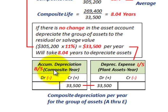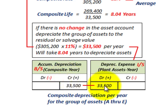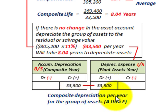To record the depreciation each year, on our balance sheet we credit accumulated depreciation for $33,500, and the debit goes to depreciation expense for plant assets on our income statement for $33,500. This composite depreciation rate is used each year to determine the accumulated depreciation for the group of assets A through E.